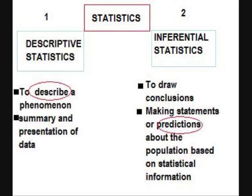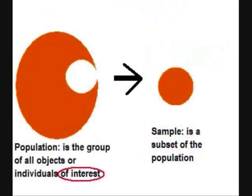Inferential statistics, on the other hand, is to draw conclusions — making statements or predictions about the population based on statistical information. Population is a group of all objects or individuals of interest. For example, all the students at the University of Toronto, all the students at the University of York, or all the cats in Canada. A sample would be only the cats in Toronto or only the cats in New York, which is a subset of the population.